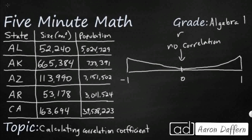We have little markers to think about: 0.7 and negative 0.7. Anything between negative 0.7 and negative 1 is going to be a strong negative correlation — that means as one goes up, the other goes down strongly; they're strongly related. Anything between negative 0.7 and 0 is going to be weak.